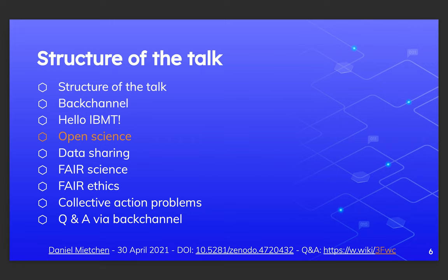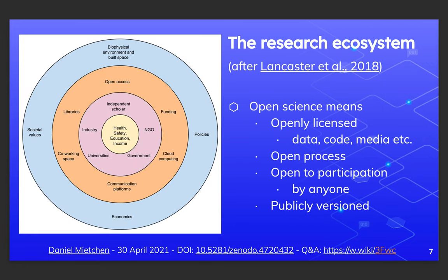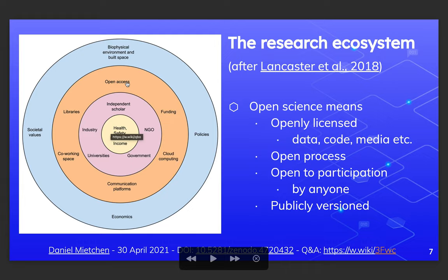We're now entering the open science part. It's important to have some idea of a research ecosystem and its different components. Here we have some basic needs of human life, certain actors that act around those needs, mechanisms they use in their actions, and those mechanisms interact with the environment — society in general or the natural environment. In this context, open science basically means that any interaction between different actors or any step in a process involved in those mechanisms can be made open, at least in principle.